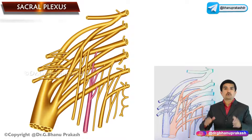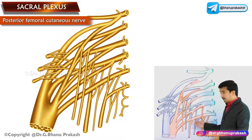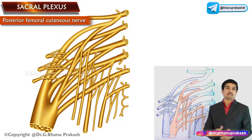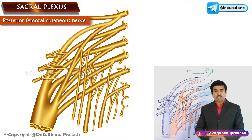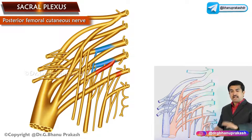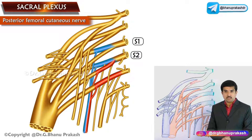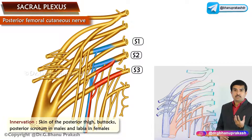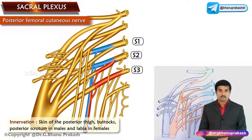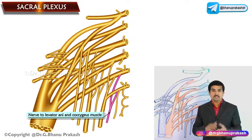The posterior femoral cutaneous nerve, also known as the posterior cutaneous nerve of the thigh, is a sensory branch of the sacral plexus. It arises from anterior as well as posterior divisions of the ventral rami of S1, S2, and S3 nerves. It supplies the skin of the posterior thigh, buttocks, and the posterior scrotum in males and labia in females.